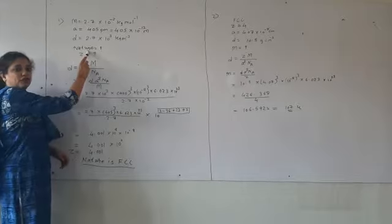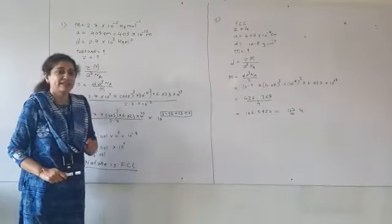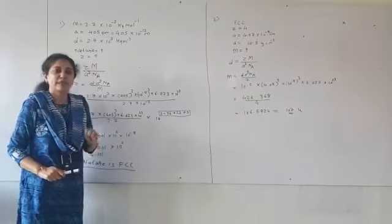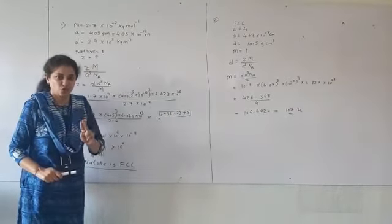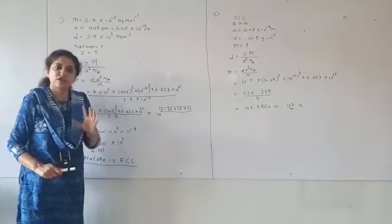Nature of unit cell we can determine from Z. For FCC, Z is 4. For BCC, Z is 2. For simple cubic, Z is 1. So whatever is the answer of Z, that will reveal what is the nature of unit cell.